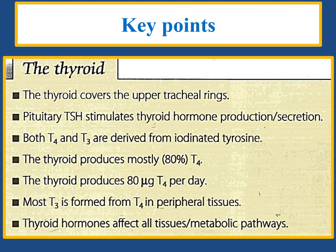Four key points of this part of the lecture: the thyroid covers the upper tracheal rings; pituitary TSH stimulates thyroid hormone production and secretion; both T4 and T3 are derived from iodine and tyrosine; the thyroid produces mostly T4 — 80 micrograms per day — and most T3 is formed from T4 in peripheral tissues; thyroid hormones affect all tissues' metabolic profiles.